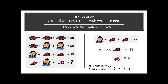Now jumping on to the third equation. In the third equation we have one man with whistle in the neck plus two pairs of whistles, and two whistles is equal to 4. So if two whistles value is 4, then one whistle value is 4 divided by 2, which is equal to 2. So one whistle value is 2. And if we have this whistle value, we can find the man's value without the whistle — simply we minus: 5 minus 2 is equal to 3.